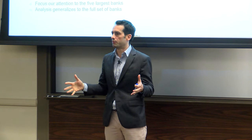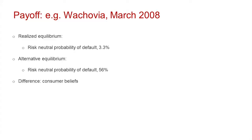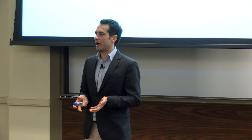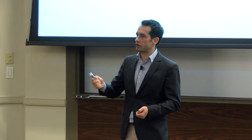Here's a flavor: Wachovia, which later died, in March 2008 had a CDS of about 3.3 in the data. When we resimulate the model for this time period, there exists an equilibrium in which the risk-neutral probability of Wachovia default is 56%. The only difference is consumer beliefs. In one equilibrium, consumers believe Wachovia is a good bank that will be recapitalized, so equity holders do recapitalize it, and it is a good bank. In the second equilibrium, consumers think equity holders won't recapitalize Wachovia, franchise value is low, and it's rational for equity holders not to recapitalize — giving a high probability of default.